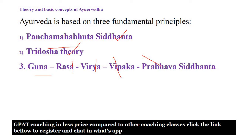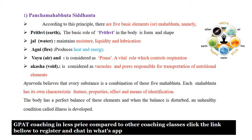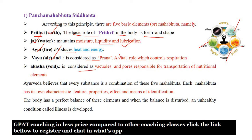The Panchabhuta Siddhanta refers to five elements: earth (Prudhvi), water (Jal), fire (Agni), air (Vayu), and sky (Akash). Prudhvi forms the shape of the body; Jal maintains moisture, liquidity, and lubrication; Agni produces heat and energy; Vayu is the Prana that controls respiration; and Akash represents space. These are the five parts of Panchabhuta Siddhanta.